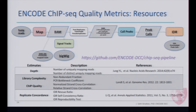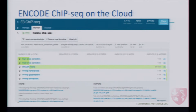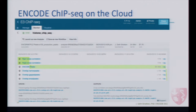This is what the histone ChIP-seq pipeline looks like running on DNA Nexus — it looks just like the RNA-seq pipeline. There is a workflow composed of steps: some run concurrently, some run by themselves, and others run at the end. This is the display you see when you run one of these pipelines to completion on the platform.